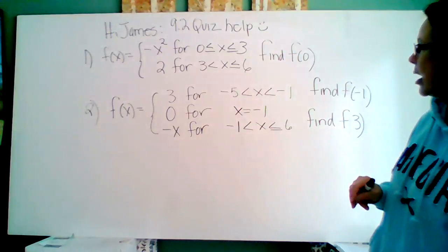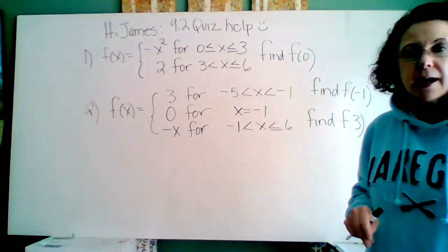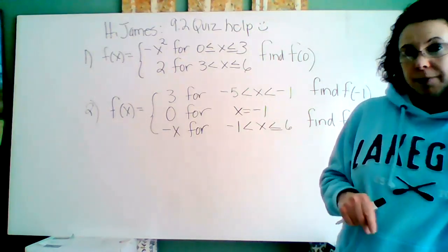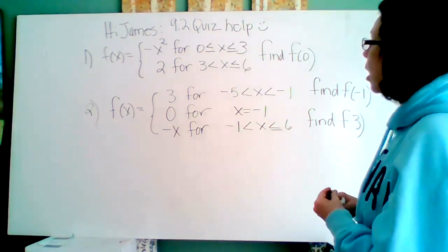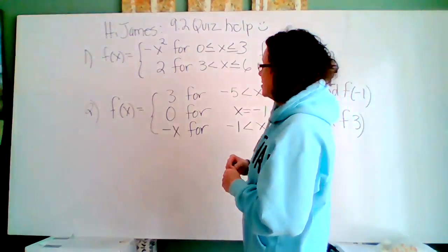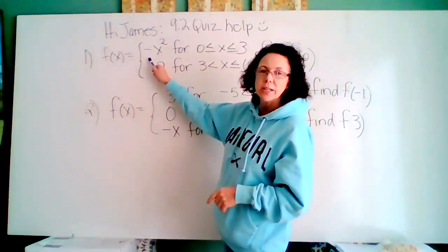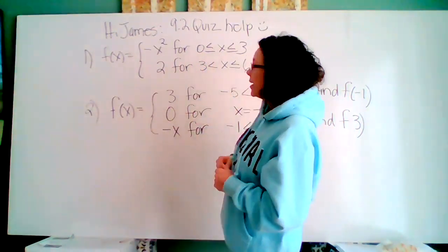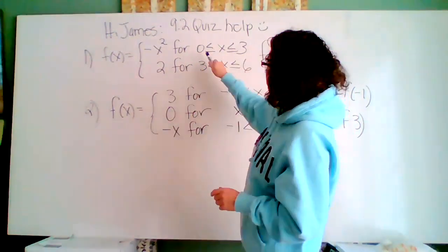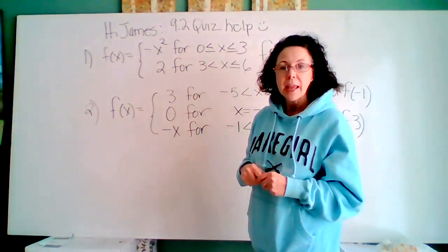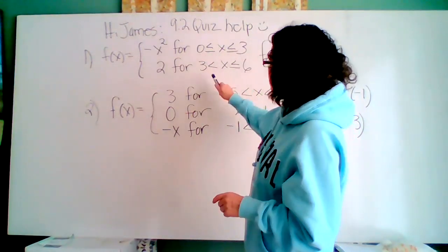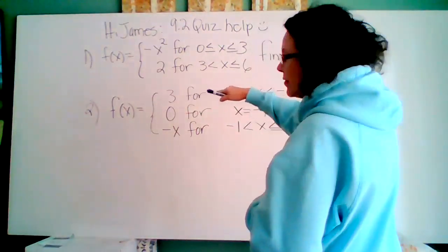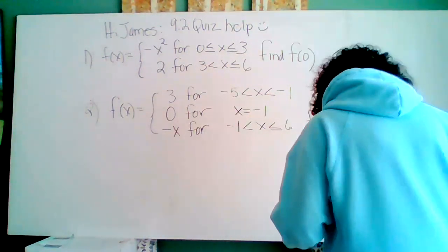So here's two different problems. It looks a mess, right? But what we're going to do, these are piecewise functions. We're going to break them into pieces. So what the first function says is you have this function negative x squared. It's an upside down parabola on a graph, but only where x's are between zero and three. And then where x's are from three to six, the function is a two, like just a flat line at two.